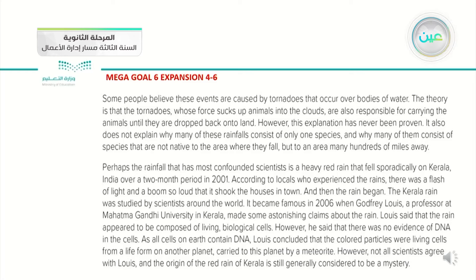Perhaps the rainfall that has most confounded scientists is a heavy red rain that fell sporadically on Kerala, India, over a two-month period in 2001. According to locals who experienced the rains, there was a flash of light and a boom so loud that it shook the houses in town, and then the rain began. The Kerala rain was studied by scientists around the world. It became famous in 2006 when Godfrey Lewis, a professor at Mahatma Gandhi University in Kerala, made astonishing claims — that the rain appeared to be composed of living biological cells, but with no evidence of DNA. As all cells on Earth contain DNA, Lewis concluded that the colored particles were living cells from a life form on another planet, carried to this planet by a meteorite. However, not all scientists agree, and the origin of the red rain of Kerala is still generally considered to be a mystery.